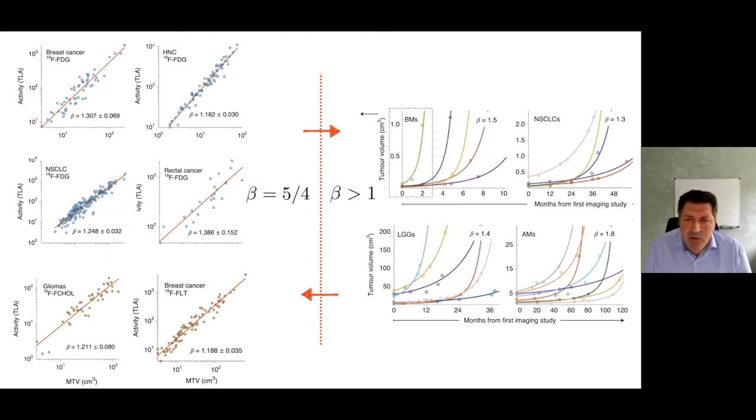That has implications for how tumors grow in time. We were able to find a small number of datasets of different tumors growing without treatment, ranging from low-grade gliomas, non-small cell lung cancer, and atypical meningiomas. We found consistently exponents beta larger than 1, pointing to accelerating dynamics in time. So it seems cancers have super-linear dynamics.